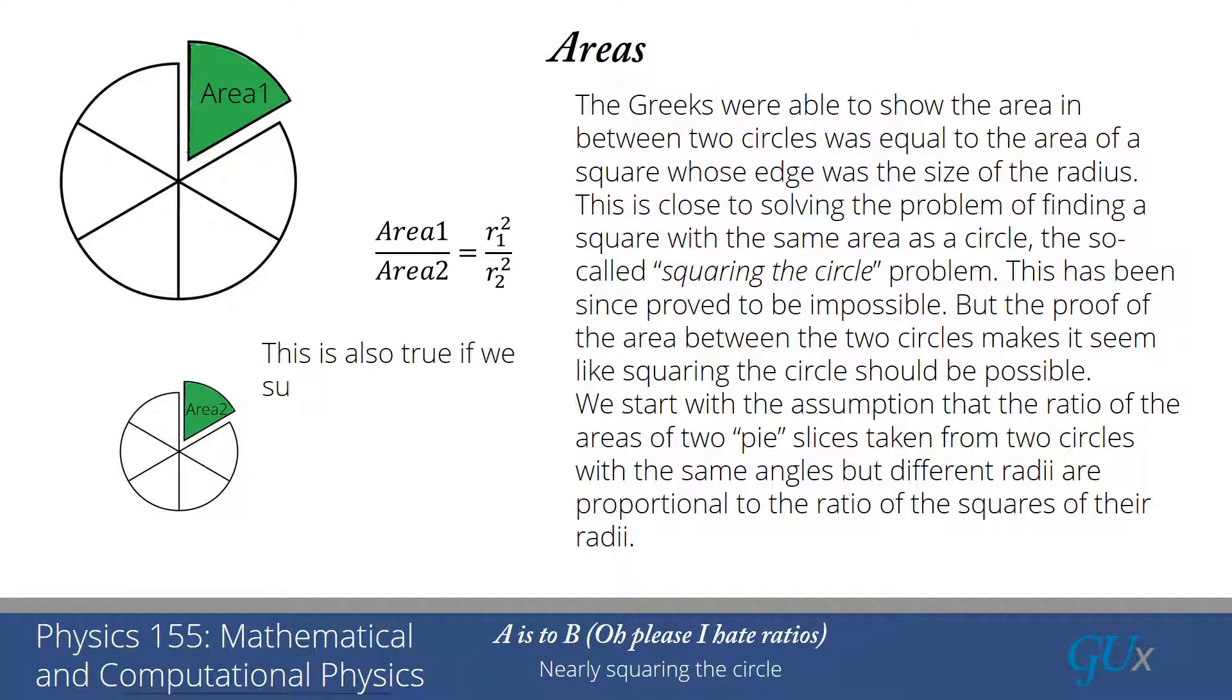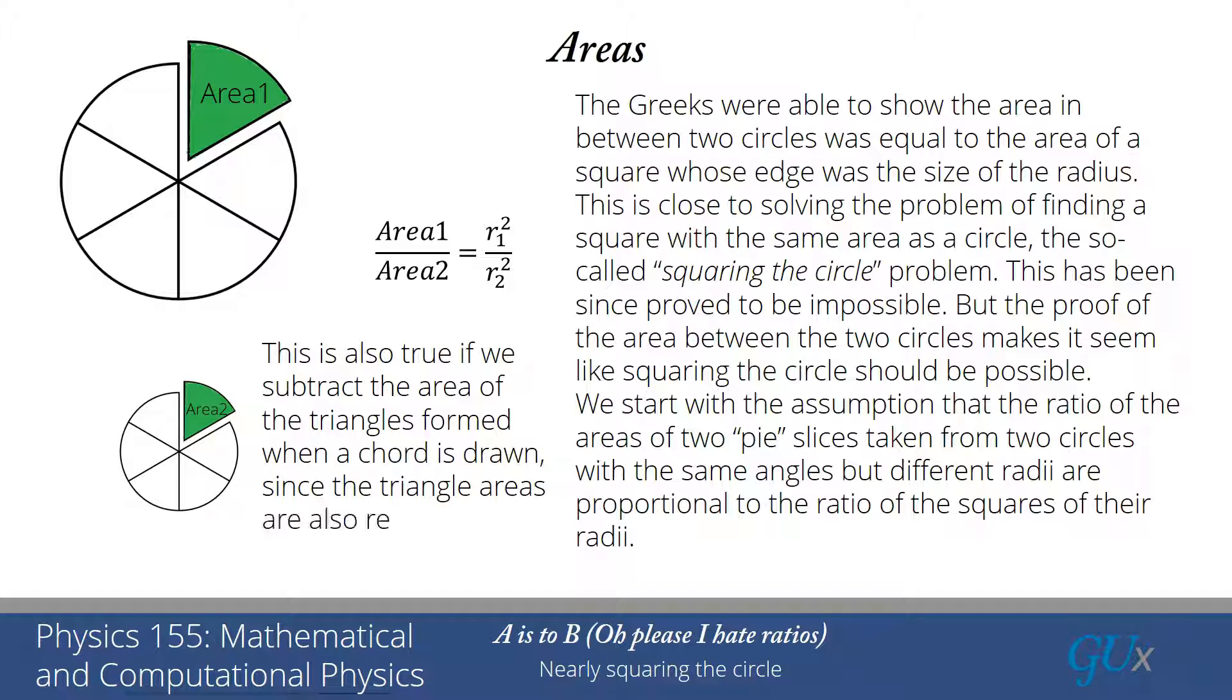And this even holds if we subtract from each of those green pi pieces a triangle that would be formed when I drew a chord on the circle and removed the inner triangle. So it says that the areas of the regions with a chord to the edge of the circle are also related by the same ratio. And that's actually the fact that we're going to use in the proof.